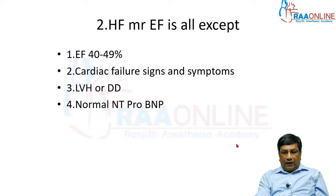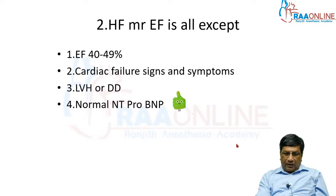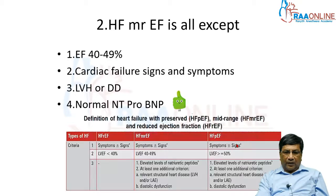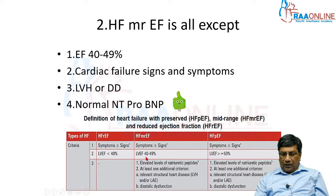Heart failure with mid-range ejection fraction is defined by all of the following except: EF 40 to 49%, cardiac failure signs and symptoms, LVH or diastolic dysfunction, and normal NTproBNP. This is a very important criteria — in the presence of elevated NTproBNP, you must have either LVH or diastolic dysfunction. So for EF 40 to 49%, you must have BNP elevation plus LVH or diastolic dysfunction.